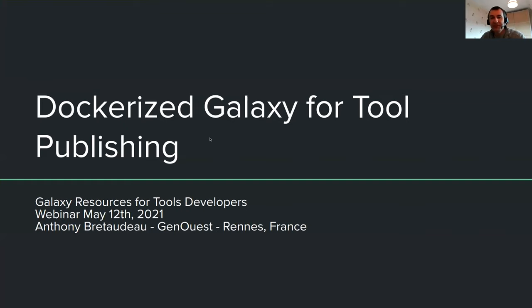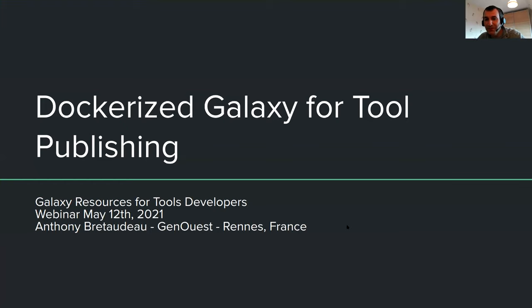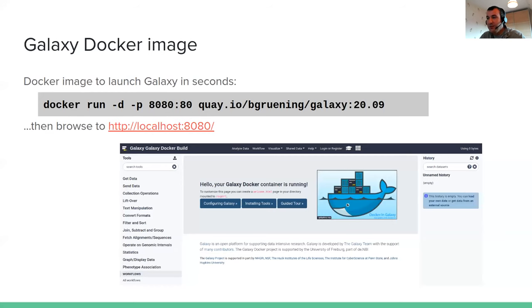Thank you, Dan. Anthony, you're up. So let's talk about Docker and Galaxy now. The first thing you need to know is that there's a Docker image available to launch a Galaxy instance very easily within seconds or maybe minutes maximum. Its name is quay.io/bgruening/galaxy. By running this command you can launch on your PC, Mac, or whatever, a Galaxy instance that you can access at this address.